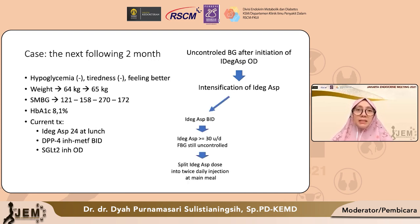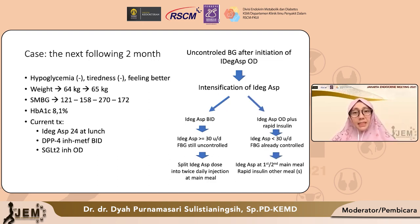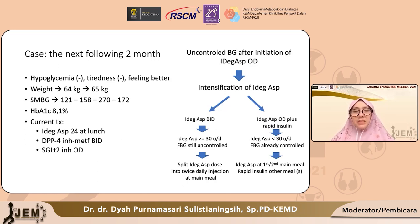Untuk intensifikasi insulin IDeg-Aspart ada dua cara. Cara pertama, insulin IDeg-Aspart-nya dijadikan dua kali sehari. Biasanya ini untuk pasien-pasien dengan dosis IDeg-Aspart yang lebih dari setengah unit per kilo atau lebih dari 30 unit sehari, dan gula darah fasting-nya relatif belum cukup terkontrol. Kita berikan IDeg-Aspart dibagi menjadi dua bagian sama besar pada dua porsi makan utama. Cara lain adalah dengan tetap memberikan insulin IDeg-Aspart satu kali sehari, namun ditambahkan insulin rapid. Ini cocok untuk pasien yang sudah berhasil mencapai target gula darah puasa namun gula darah post-prandialnya di waktu lain masih belum tercapai, seperti pada pasien ini.